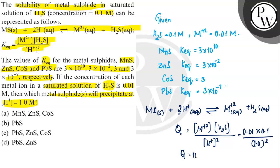Since Q is greater than K equilibrium of PbS, PbS will precipitate at H+ concentration of 1 molar.